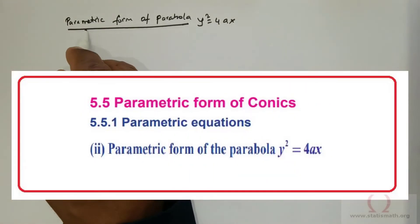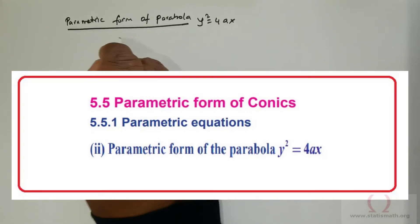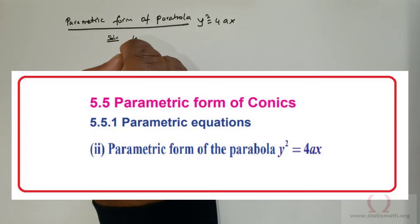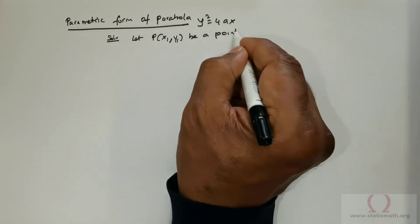Students, in this lesson, we will study the parametric form of the parabola y² = 4ax. To start off with, we will take a point P(x₁, y₁) on the parabola.